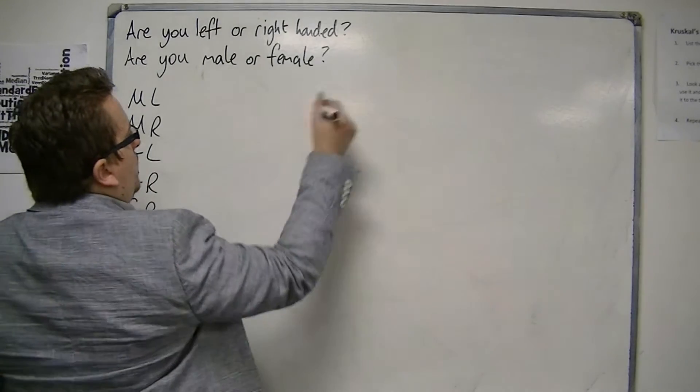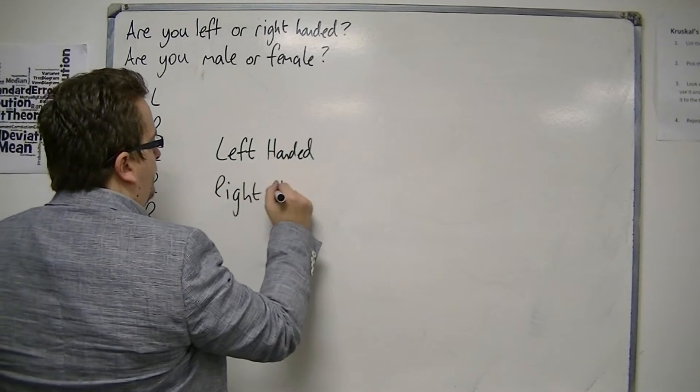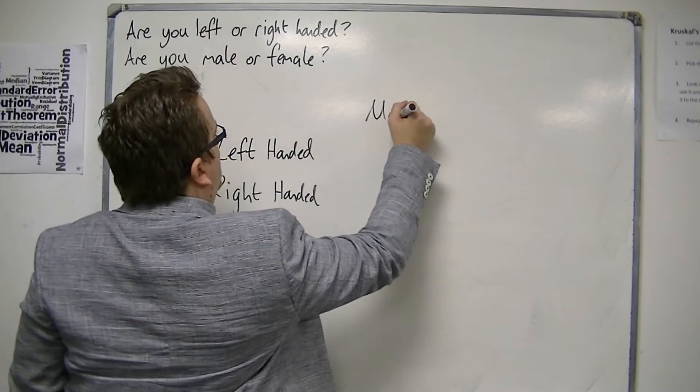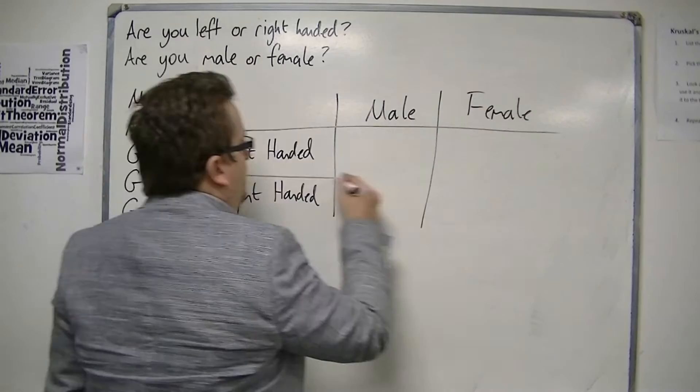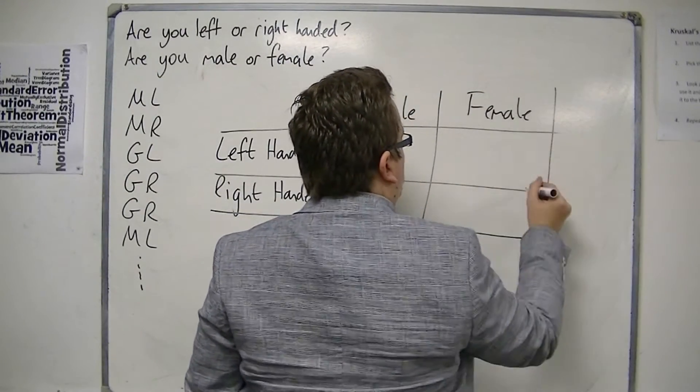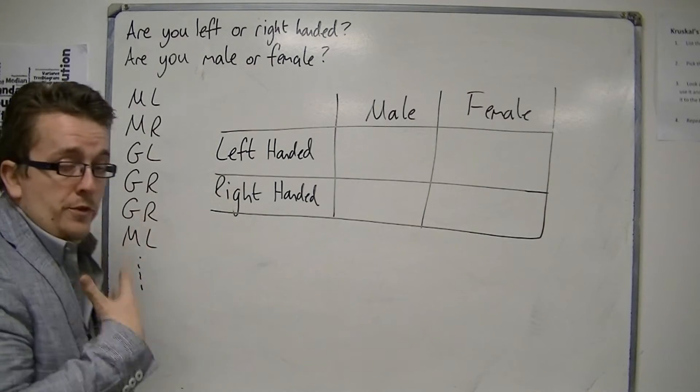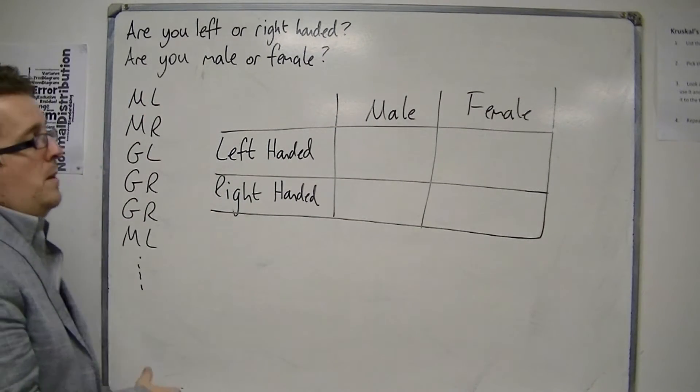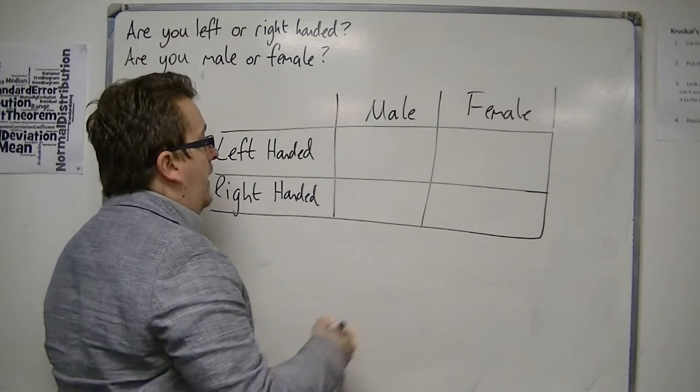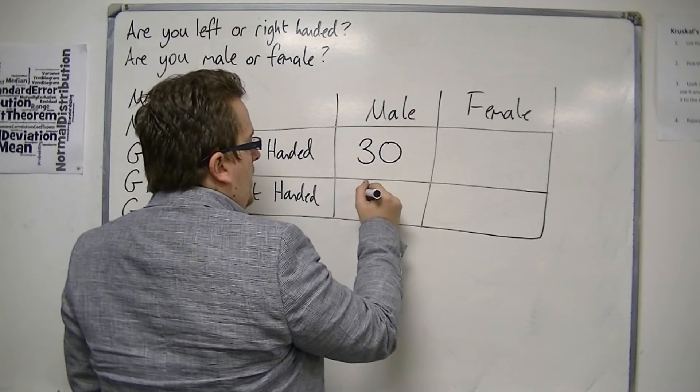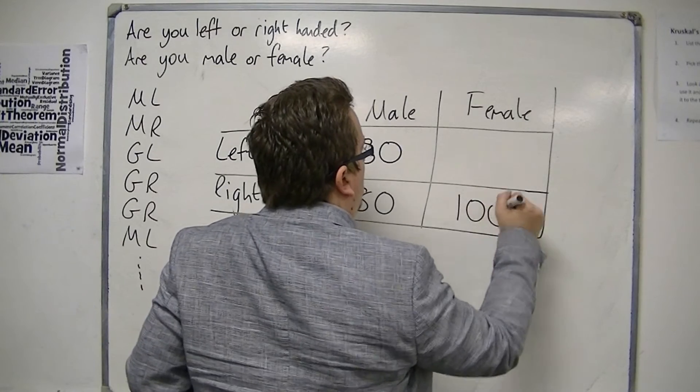So a two-way table will look something like this. So we're going to have left handed, right handed, male and female. So we've got the gender at the top, and alongside we've got left handed or right handed. And then I go through. I could do this as a tally as I go through. But let's say I've got quite a few results. And what I end up with is 30, 80, 100 and 35.